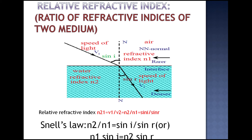Dividing both numerator and denominator by C, we get N21 is equal to (V1/C) divided by (V2/C). Since V1 by C equals 1 by N1, and V2 by C equals 1 by N2, therefore N21 is equal to N2 by N1.